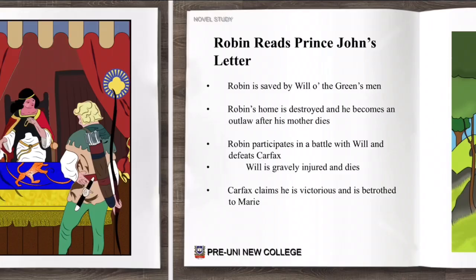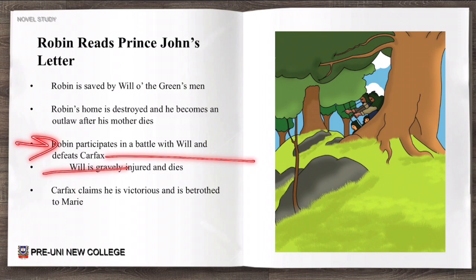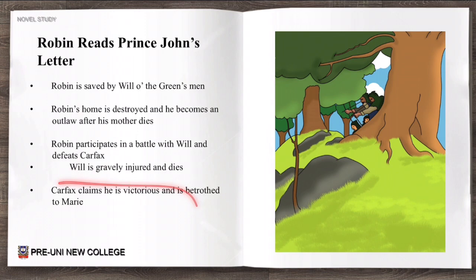Next, in Robin reads Prince John's letter: Robin is saved by Willow the Green's men. However, his home is destroyed, so Robin becomes an outlaw — a criminal — after his mother dies. Robin goes to participate in a battle with Will and defeats Carfax from the previous chapter. But then Will is gravely injured and dies as well. Carfax claims he is victorious and is betrothed to Marie.